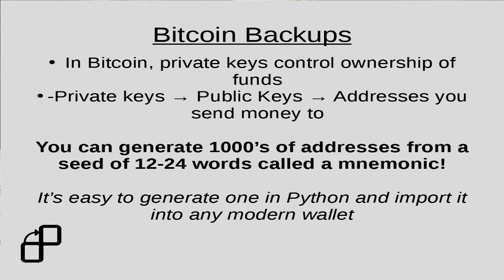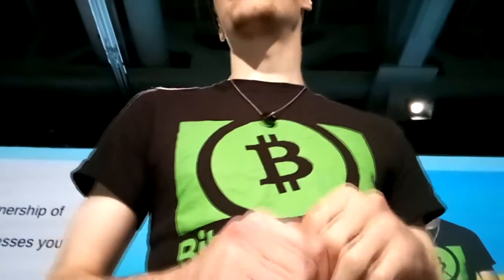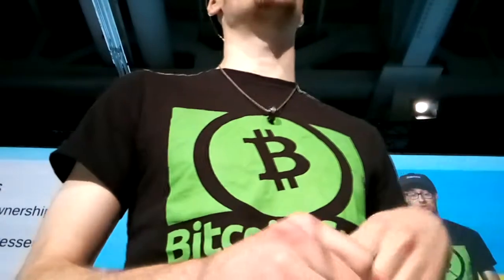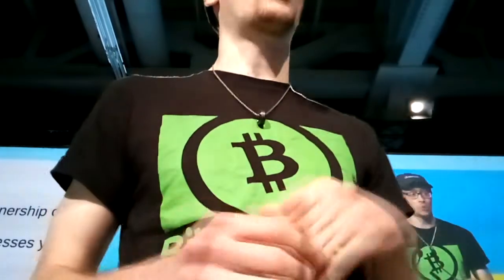And it turns out, thanks to some really cool developers in the space, that you can actually generate thousands of addresses and thousands of public keys to store your money, just from a seed of 12 to 24 English words. I think that's pretty magical. And it turns out it's really easy to generate one of these cryptographic seeds in Python and import it into any modern wallet software.